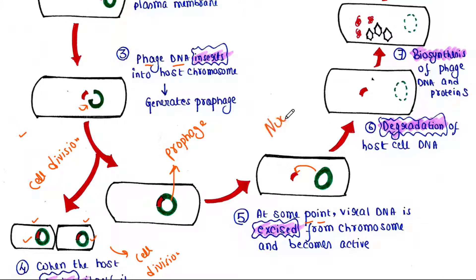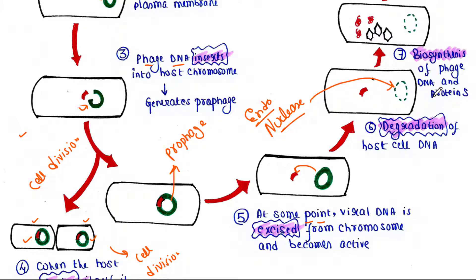One of these enzymes is a nuclease enzyme — specifically an endonuclease enzyme — which will cleave the bacterial chromosome. So the bacterial chromosome is now fragmented, or you can say it is now degraded.